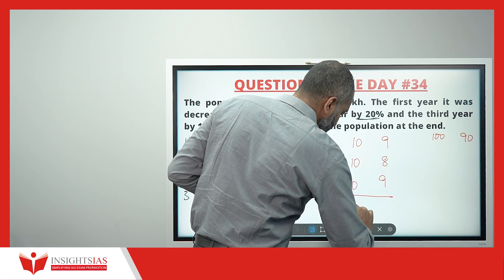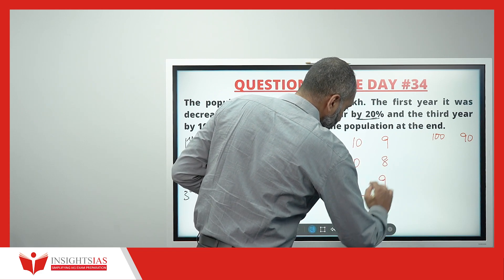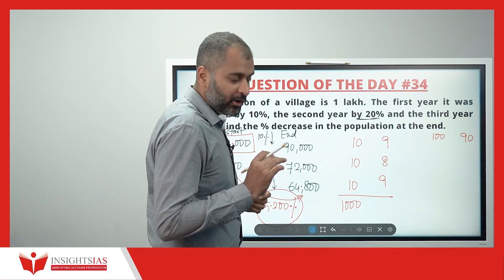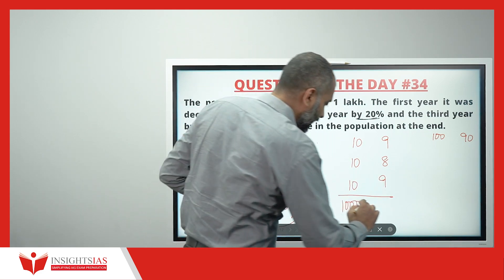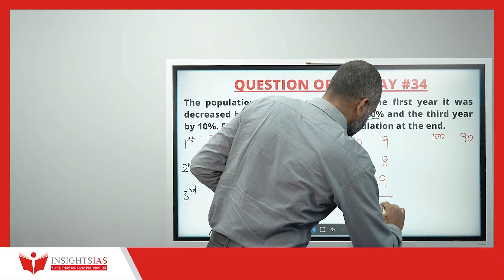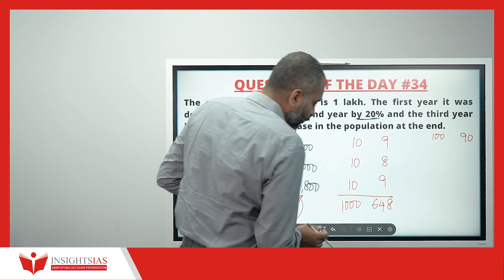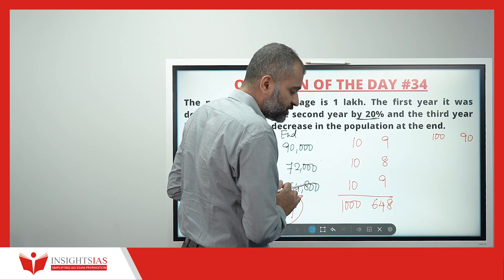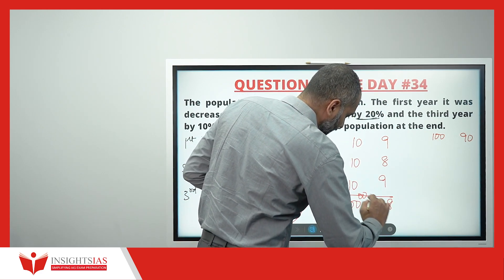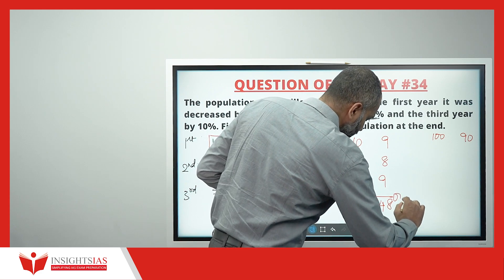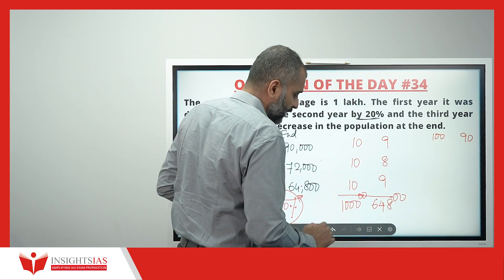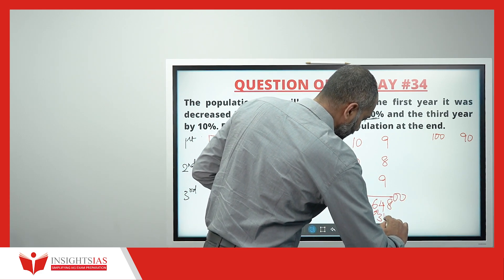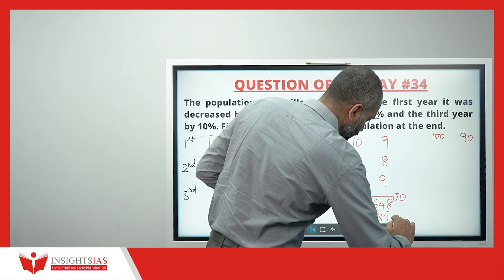So 10 × 10 × 10 = 1000, and 9 × 8 = 72, and 72 × 9 = 648. For every 1000, if the population becomes 648, then for every 1 lakh it becomes 64,800. The decrease is 35.2.